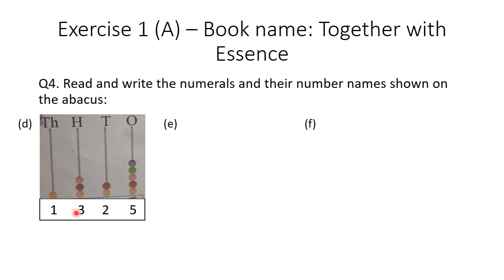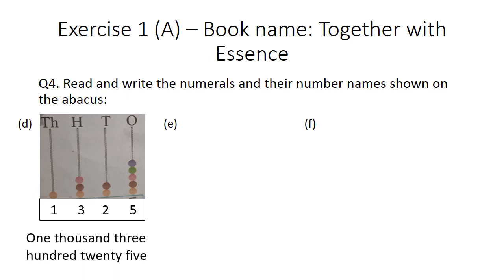Part D: at the tens place there are 2 beads, at the hundreds place there are 3 beads, at the thousands place there is 1 bead, and the ones place has 5 beads. The number formed is 1325, and its number name is one thousand three hundred and twenty-five.